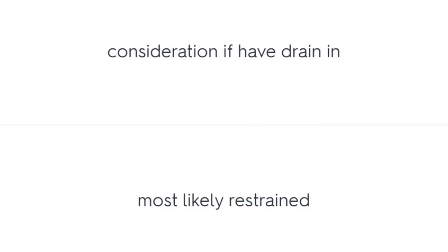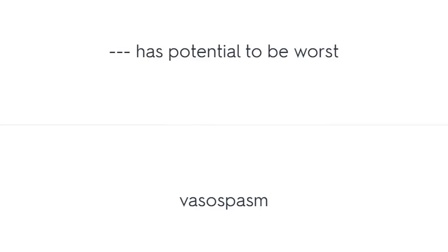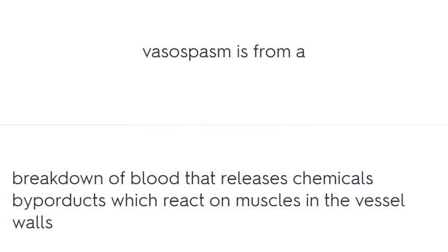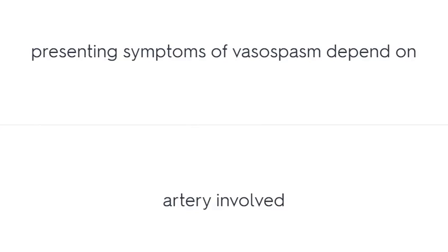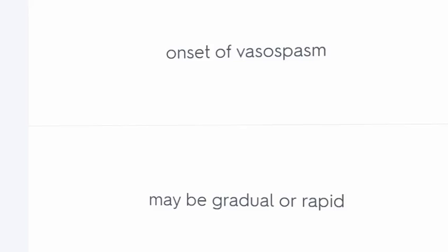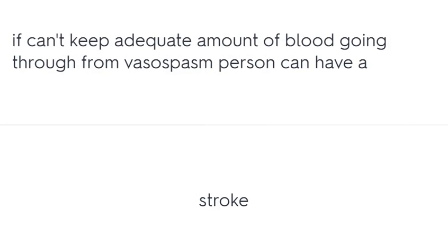If the patient has a drain and it is clamped down with a headache, the patient most likely needs a ventriculoperitoneal shunt. Vasospasm has the potential to be the worst complication. Vasospasm results from breakdown of blood releasing chemical by-products that react on muscles in the vessel walls. Vasospasm is most common 4 to 14 days after the bleed, peaking at 7 days. Presenting symptoms depend on the artery involved, and onset may be gradual or rapid. If adequate blood flow cannot be maintained through vasospasm, the person can have a stroke.